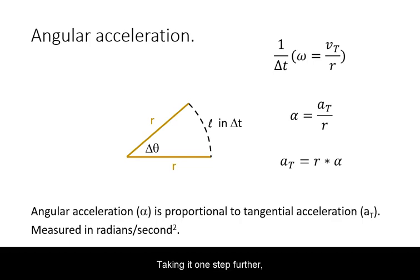Taking it one step further, tangential acceleration is the rate of change of tangential velocity with time. Angular acceleration is the rate of change of angular velocity with time. They are related through the radius in a similar way.